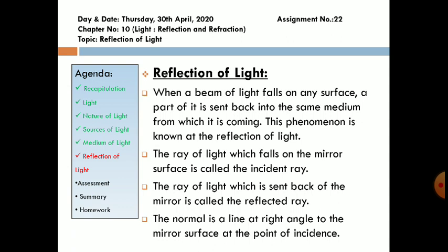The ray of light which falls on the mirror surface is called incident ray. The ray of light which is sent back of the mirror is called reflected ray. The normal is the line which is right angle to the mirror surface and is at the point of incidence.